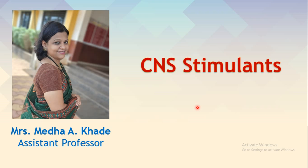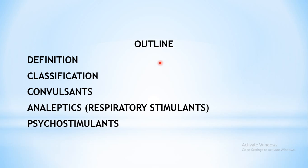We shall begin with the next chapter under the CNS, that is CNS stimulants. The outline of the chapter covers the definition of CNS stimulants, the classification of drugs used as CNS stimulants, and then the individual drugs. There are three main classes: convulsants, analeptics or respiratory stimulants, and psychostimulants.